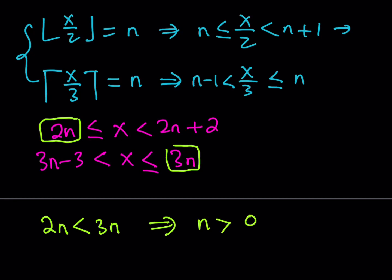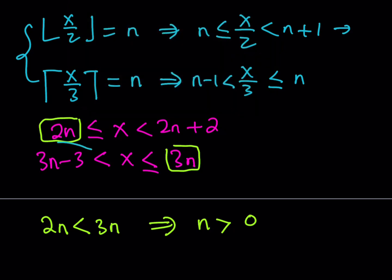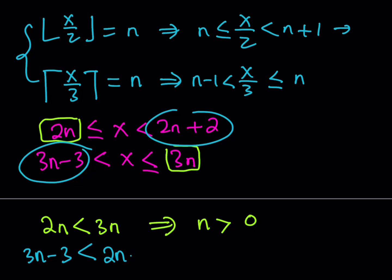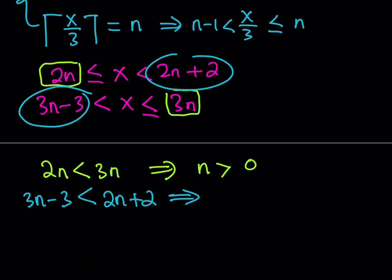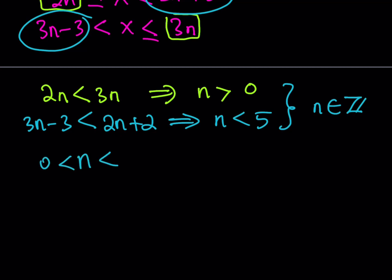This shows n must be positive. For the second comparison, we need 3n minus 3 less than 2n plus 2. Subtracting 2n from both sides gives n less than 5. Both conditions must hold simultaneously, so we take the intersection. Since n is an integer and 0 < n < 5, n can be 1, 2, 3, or 4.